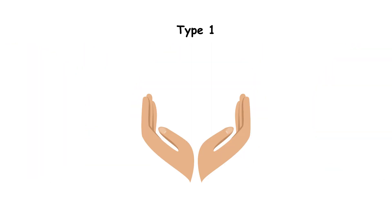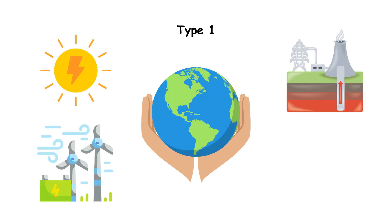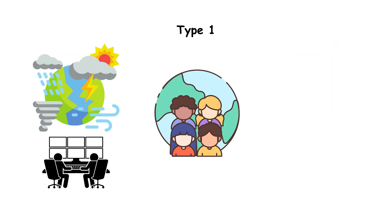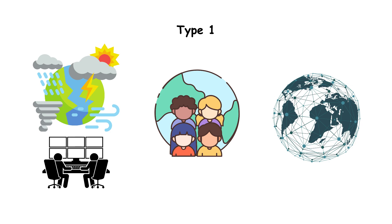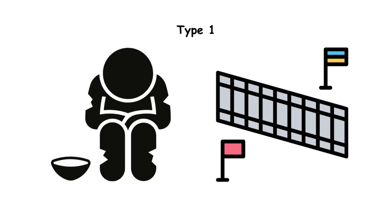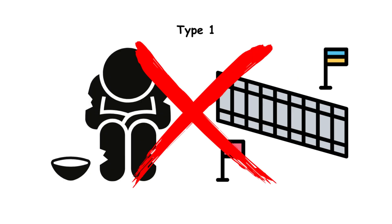A Type 1 civilization fully controls Earth's energy. They use solar, wind, geothermal, and fusion power. They can manipulate weather, speak a universal language, and have a planetary network connecting everyone. Poverty and borders may no longer exist, but risks remain.